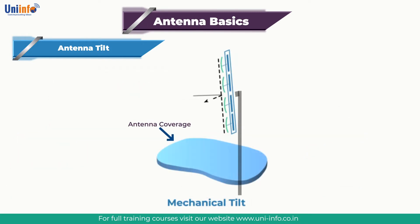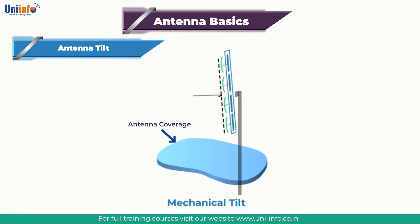Conventional mechanical down tilting involves a rudimentary arm bracket to tilt the antenna body forward, focusing the antenna boresight into the ground below. This has the effect of localising coverage to the target area, but has the unintentional effect of up-tilting rear and side lobes.